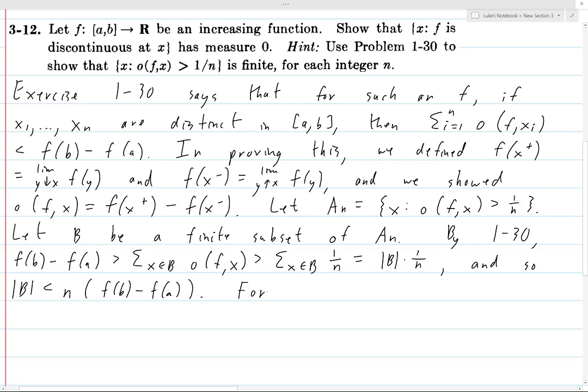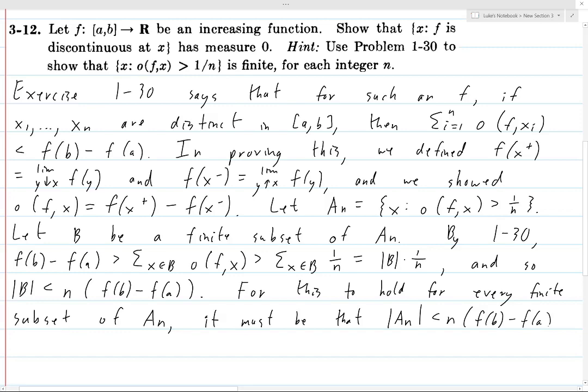Okay, so we have an upper bound on the number of elements in B. So for this to hold for every finite subset of An, then it must be the case that the size of An also satisfies the same equality, n times (f(b) minus f(a)).